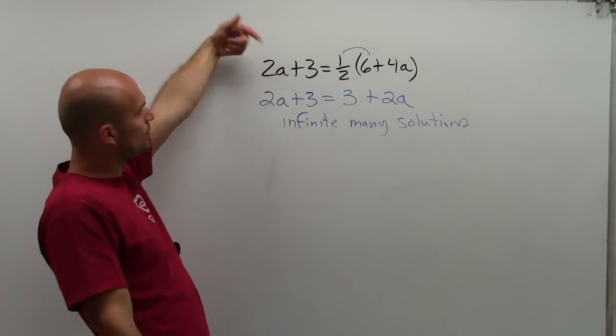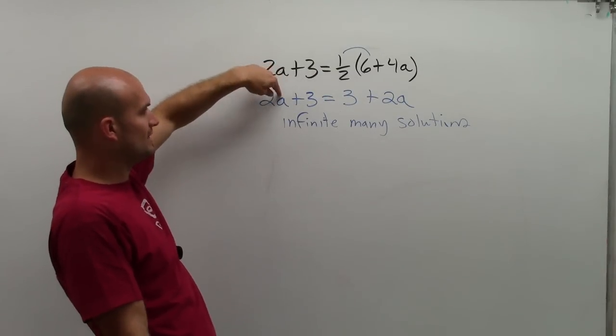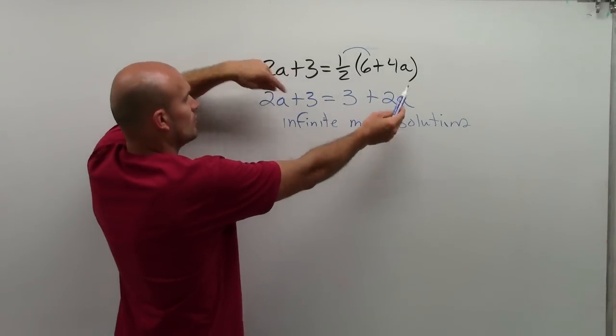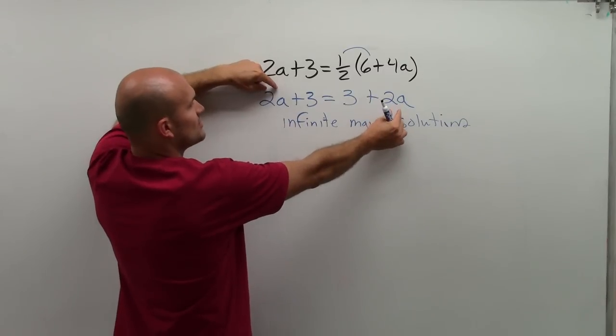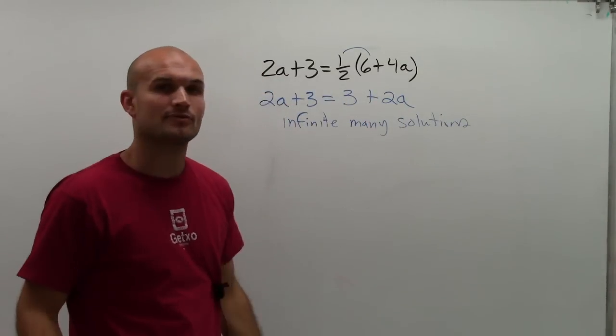And you can just try it. But remember, whatever you put in for a, let's say you put a 1 in here, you have to put a 1 in there. Well, you're still going to multiply that 1 times 2, and then you're always going to add them by 3.